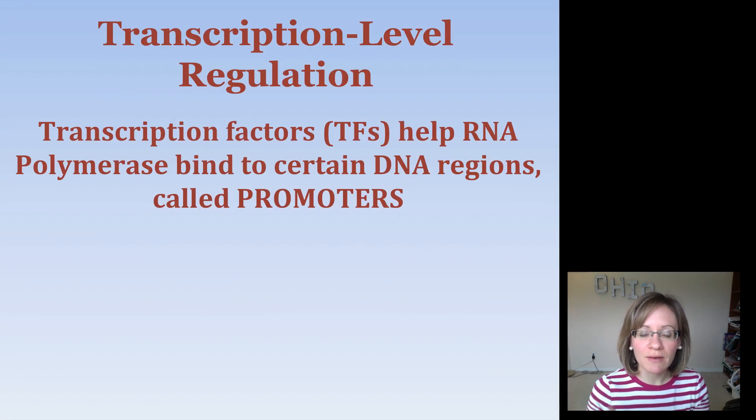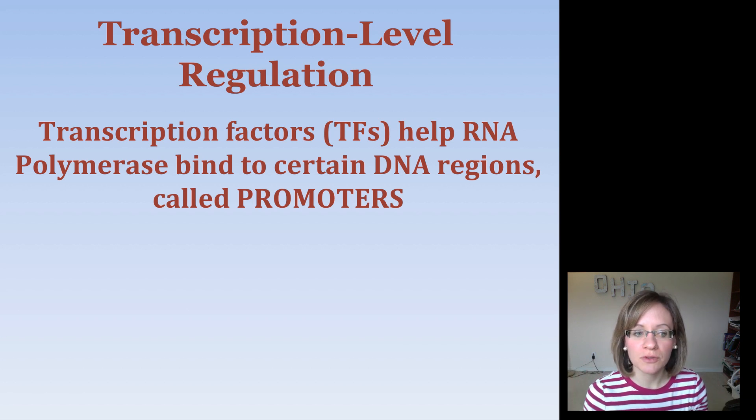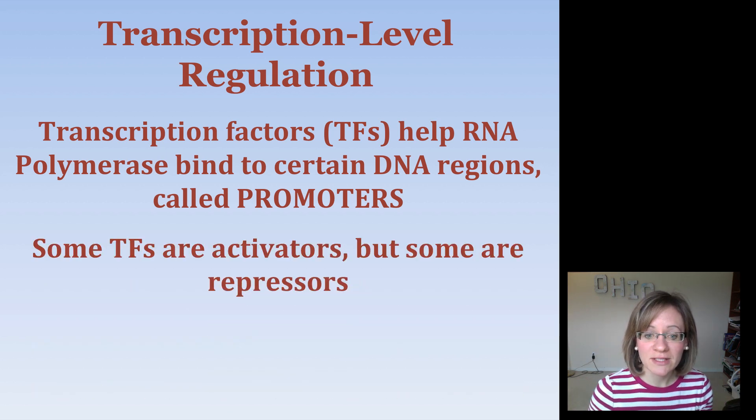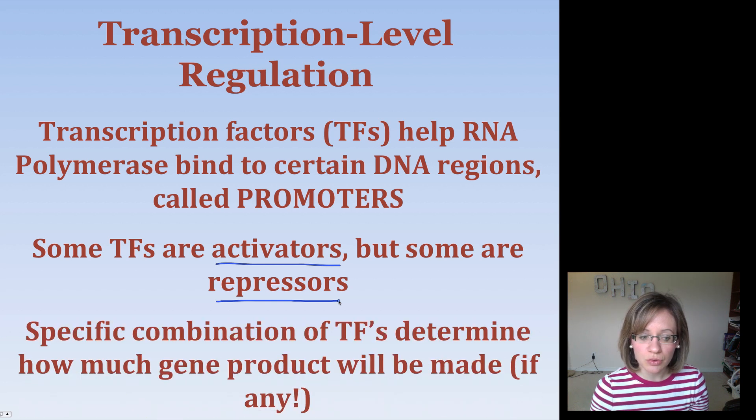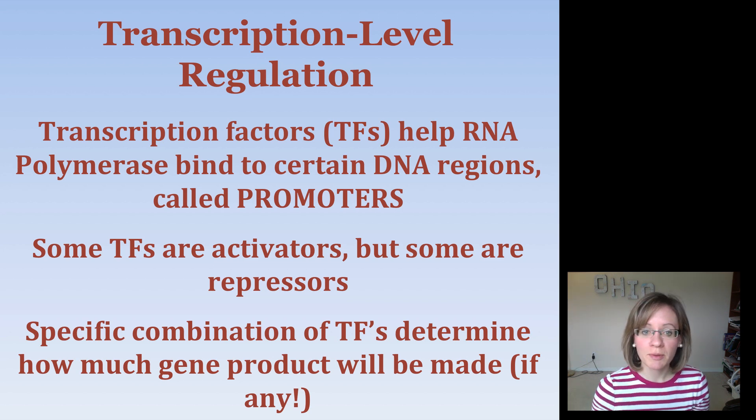So at the transcription level, at that first level regulation, we have something called transcription factors. Transcription factors help RNA polymerase to bind to the promoters. Remember those certain DNA regions that we learned about with the operon? Well, eukaryotes also have promoters. And transcription factors help RNA polymerase to bind. Those would be called activators. Now, there are also some transcription factors that act as repressors and actually inhibit RNA polymerase from binding. So you have both that on and off control there. And the specific combination of all of these, and there's hundreds of transcription factors, actually determine how much gene product will be made, will be transcribed, if any product will be made at all.